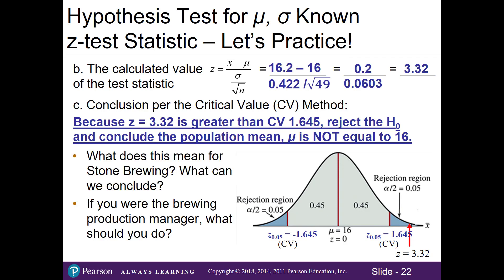What does this mean for Stone Brewing? Since we rejected the null, we conclude that the machine is not filling correctly. If you were a production manager, this means the machine needs to be fixed.